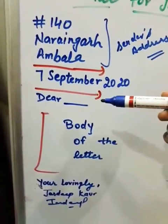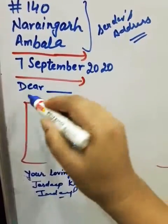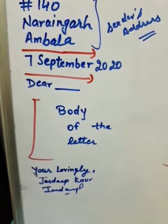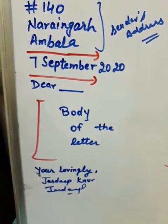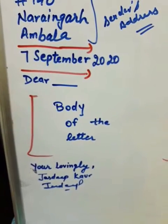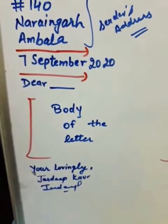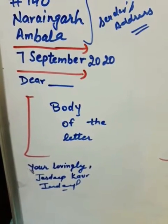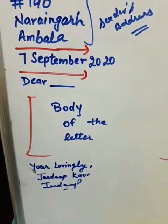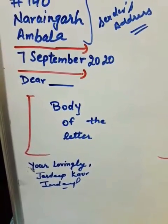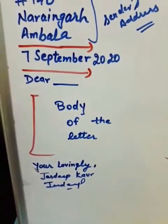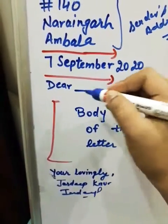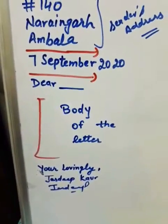Then salutation — you will write 'Dear' followed by to whom you are writing. If you are writing to your friend you can write 'Dear Bestie' or even your friend's name if it is given in the letter. If you are writing to your father, then 'Dear Father'; dear mother, dear uncle, dear aunt. I have left a blank here — you can fill it according to your letter's demand.